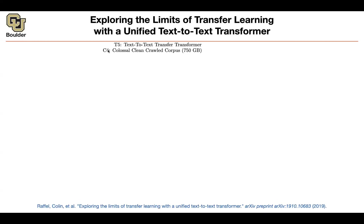You're also going to be hearing about C4. It's a dataset — a cleaned version of data collected from Common Crawl. It's a clean version, so it's going to be a little bit smaller than Common Crawl itself. It's a huge dataset: 750 gigs.